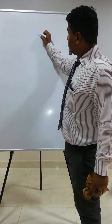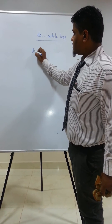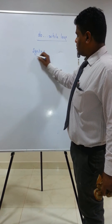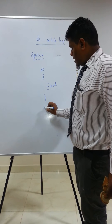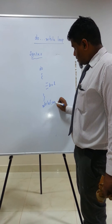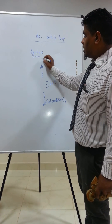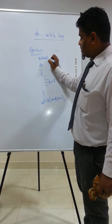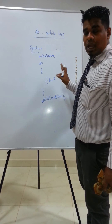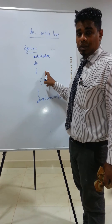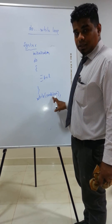Now I will move over to the second category: exit control loop. Exit control loop — that is do-while. Do-while loop is an exit control loop. The syntax is: do, then the body of the loop, then while(condition); and at the end of this statement I must put a semicolon. The initialization value is placed before the do. Whether even when the condition is false, at least one time the body of the loop will be executed. At the end, the condition will be evaluated. This is the concept of do-while.